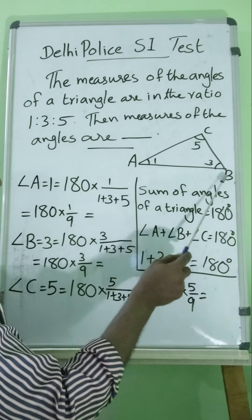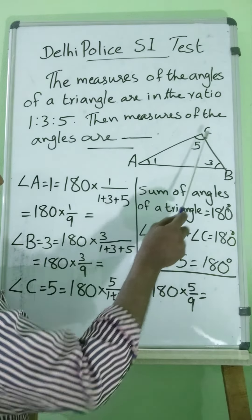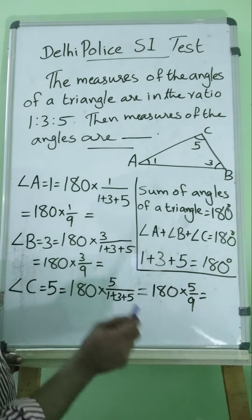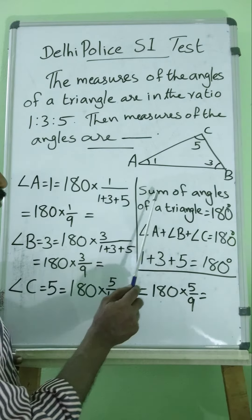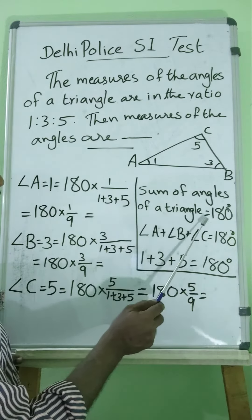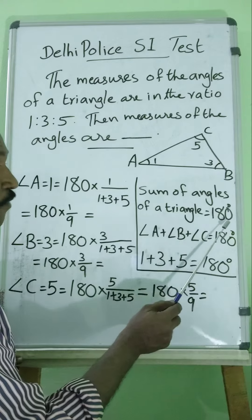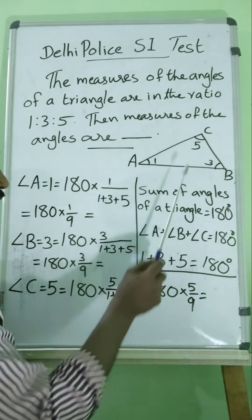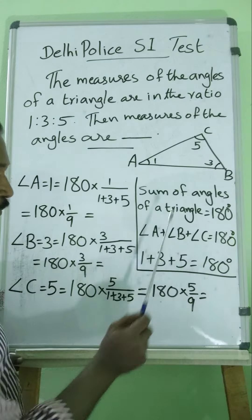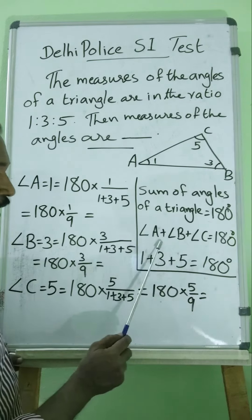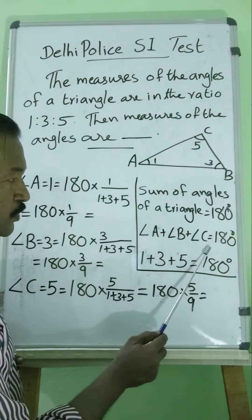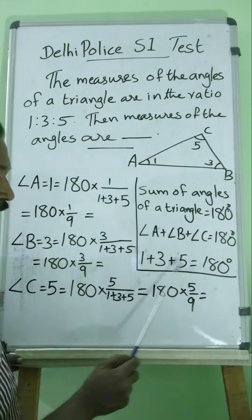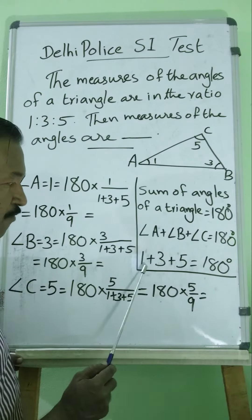Angle A has ratio 1, Angle B has ratio 3, and Angle C has ratio 5. We know that the sum of the angles of a triangle is 180 degrees. So Angle A plus Angle B plus Angle C equals 180 degrees. That is, from the ratios: 1 plus 3 plus 5 equals 180 degrees.